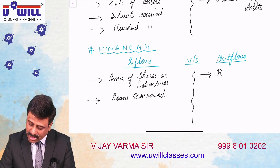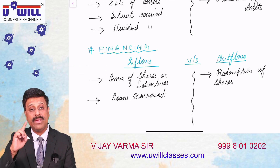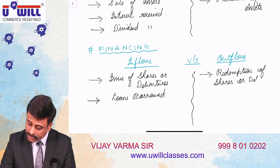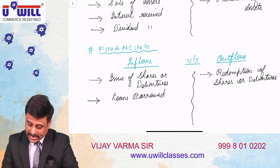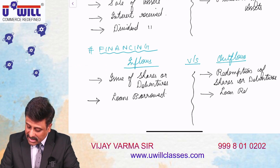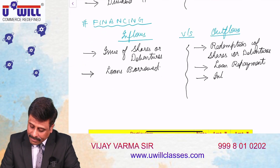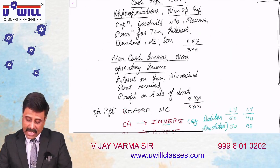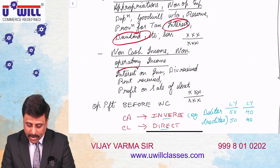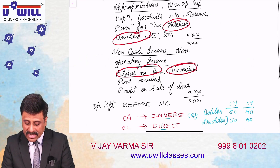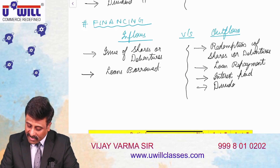Outflows of financing activities include redemption — that is repayment — of preference shares or debentures, loan repayment, interest paid on loans and debentures, and dividend paid. Note that interest received and dividend received are investing activities inflows, while interest paid and dividend paid are financing activities outflows.